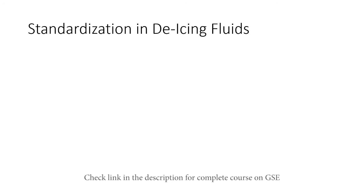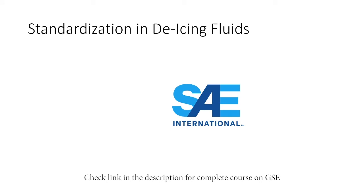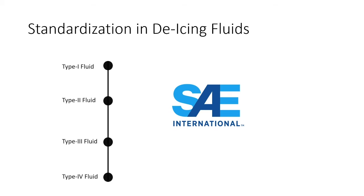De-icing fluids have been standardized by an organization called SAE International, whose former name was Society of Automotive Engineers. It has classified fluids used for de-icing aircraft into four types: Type 1, 2, 3, and 4 fluids. Type 1 fluids are called de-icing fluids, whereas the other three types are called anti-icing fluids.